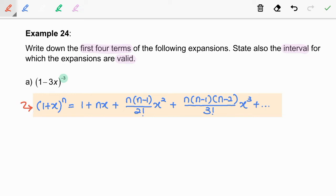Let us find x and n by comparing 1 minus 3x to the power of negative 3 with 1 plus x to the power of n. As we see here, x is equal to negative 3x and n refers to the power number which is negative 3.